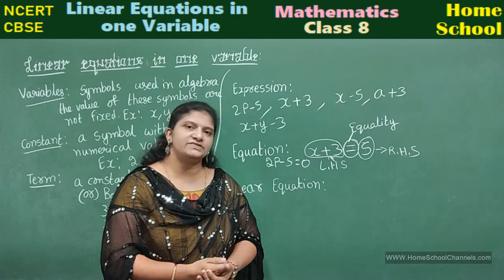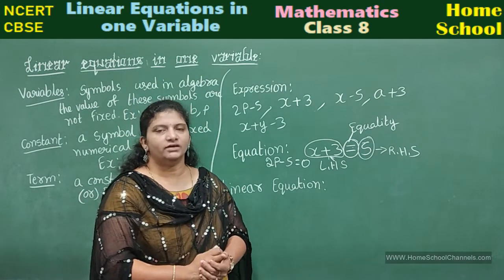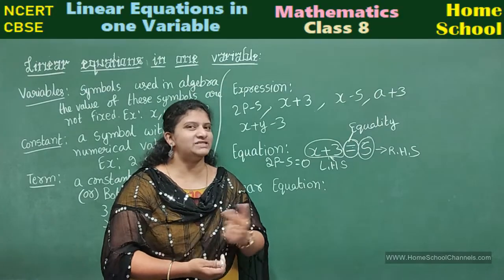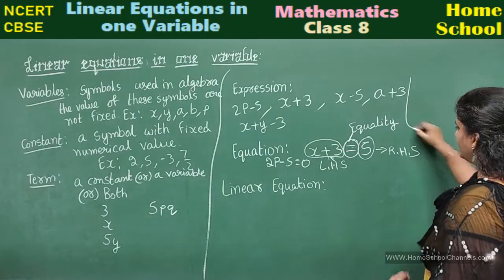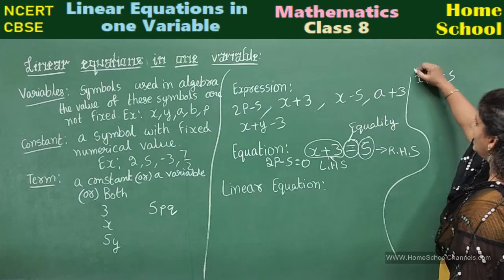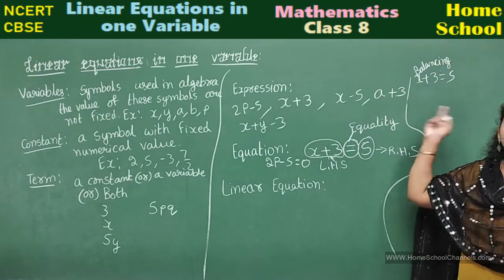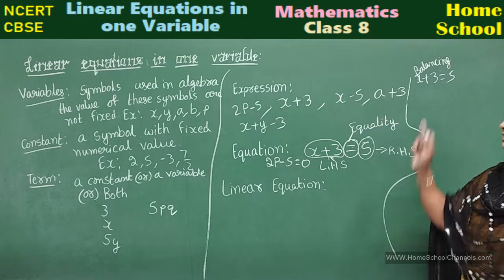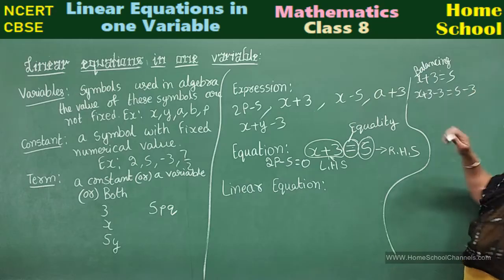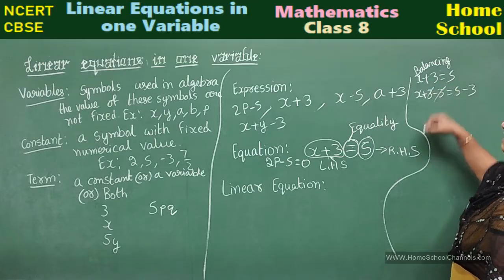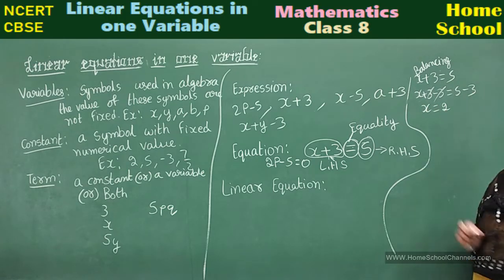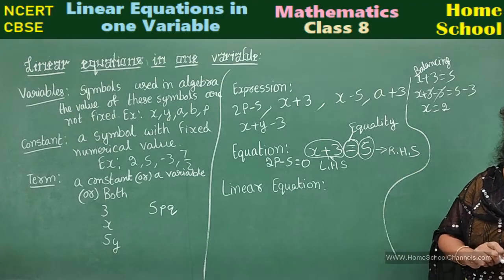Solving these equations was done in Class 7. You can solve in two methods: balancing the equation and transposing. By the balancing method for x plus 3 equal to 7 — subtract 3 on both sides: plus 3 minus 3 cancels, giving x equal to 5 minus 3, which is 2.